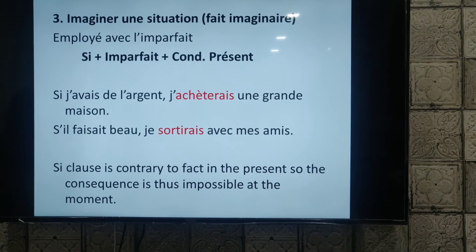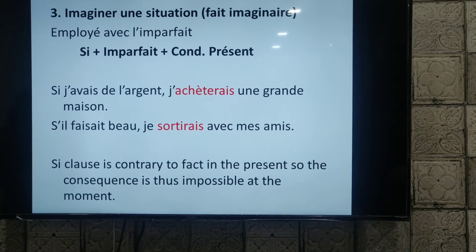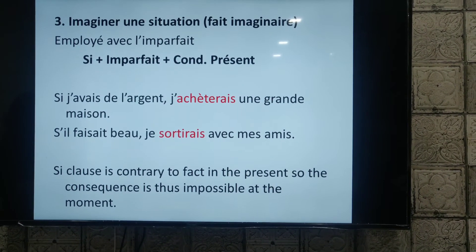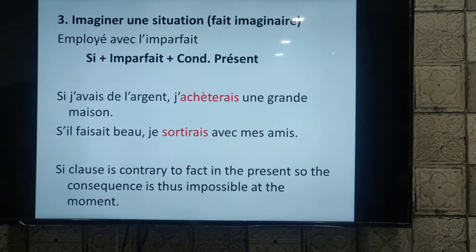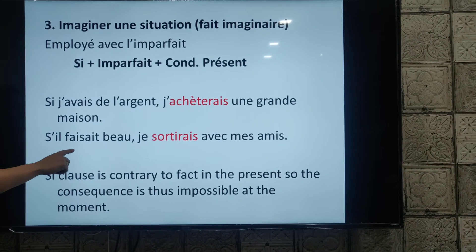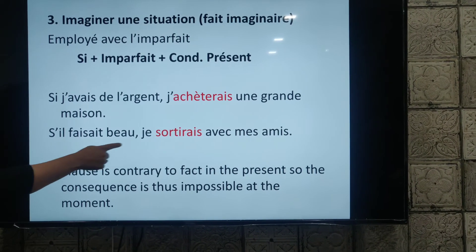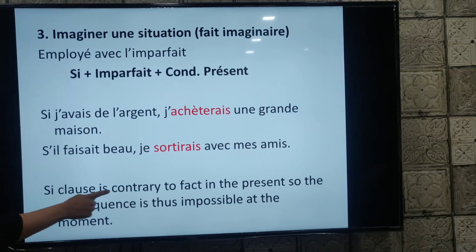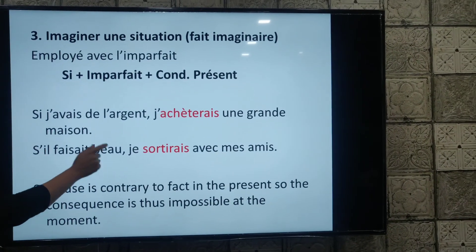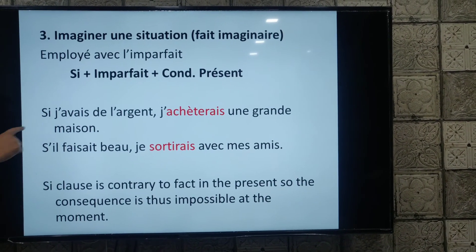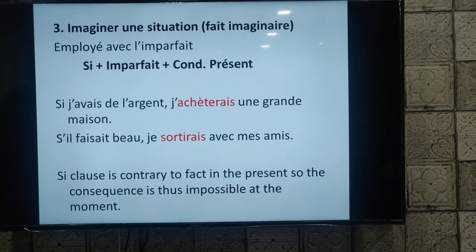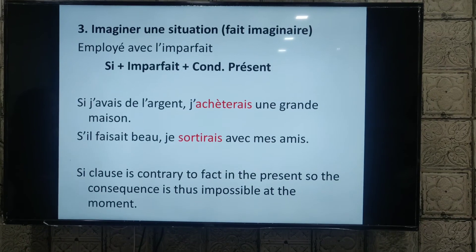What is most important to understand is that this is an imaginary thing — these are impossible things right now. We are not talking about the past, present, or future. We are only talking about things which are not possible right now with this given situation. This may change in the future, and if it does, the consequence may probably become possible. But right now, the clause is contrary to fact in the present — for example, right now I don't have money, so I cannot give it to you.